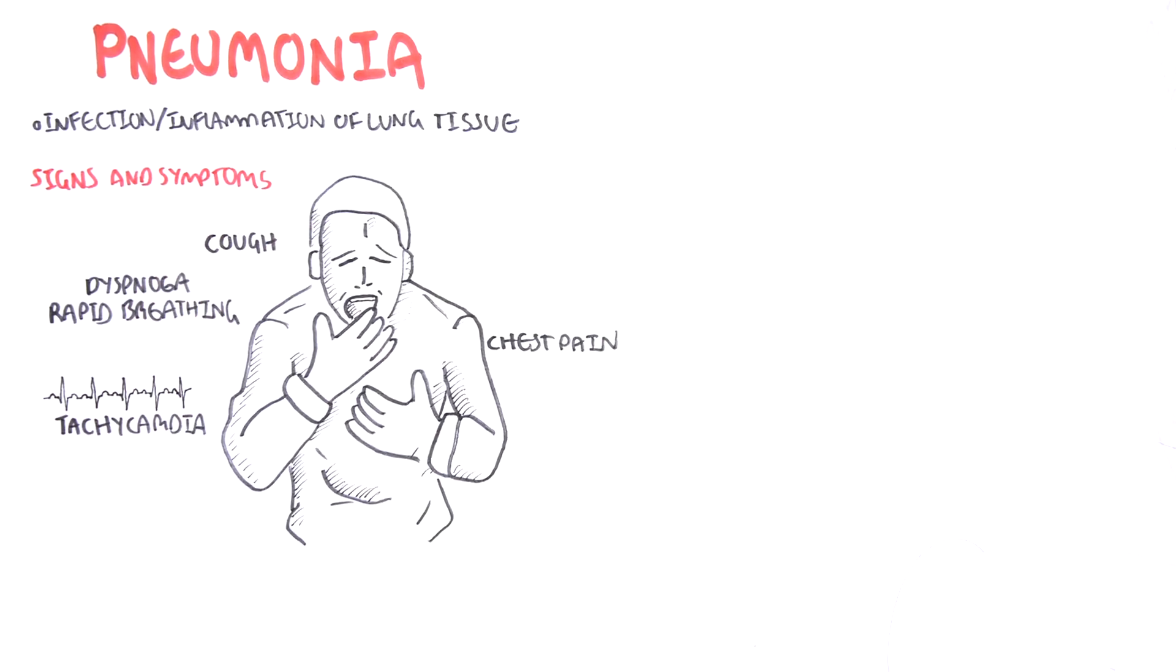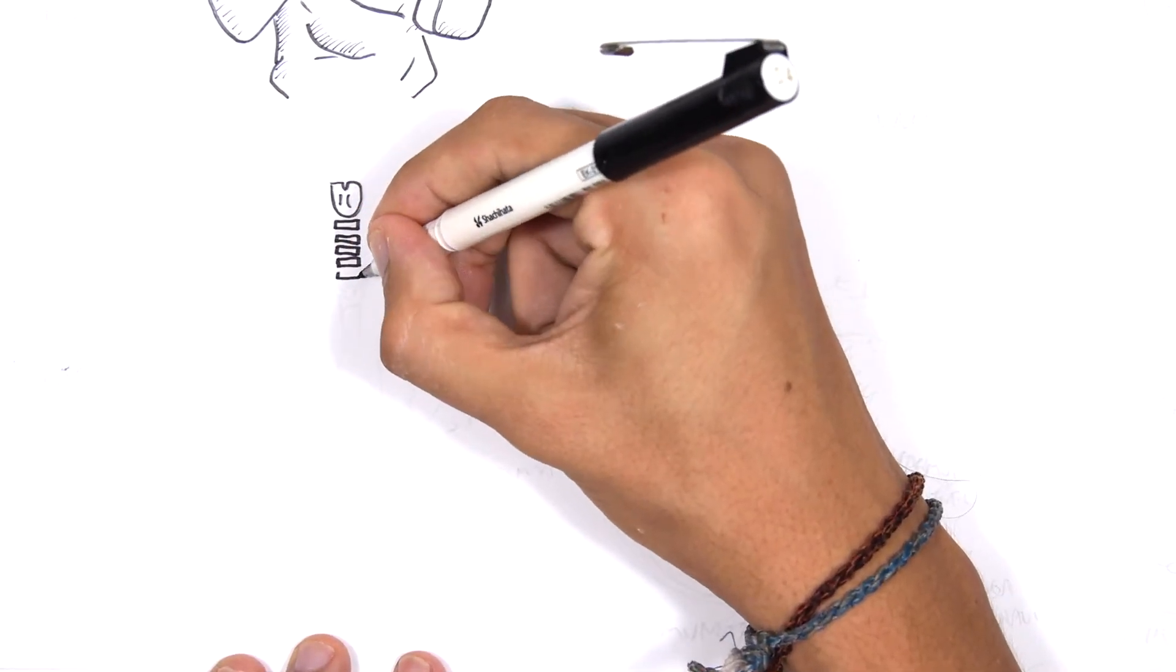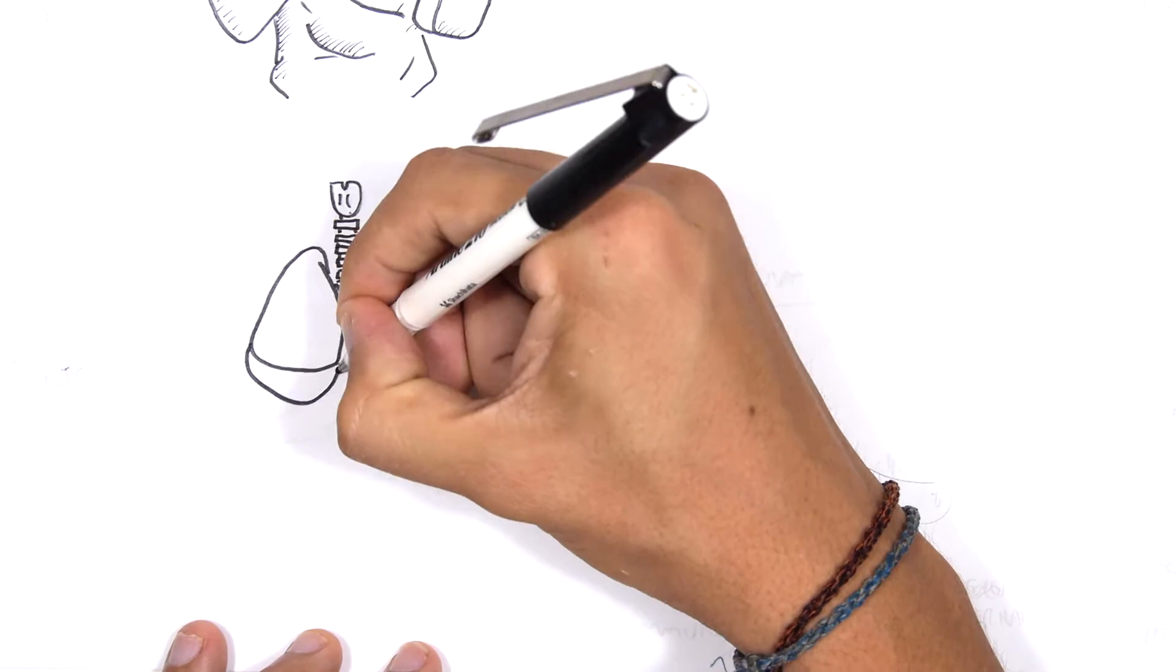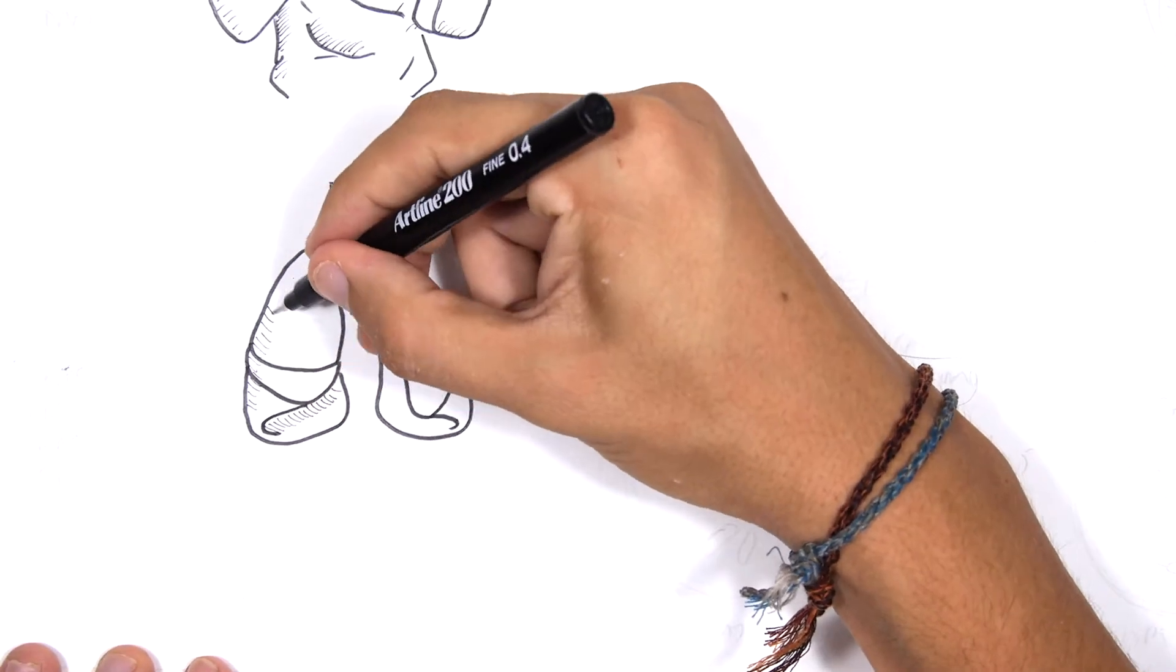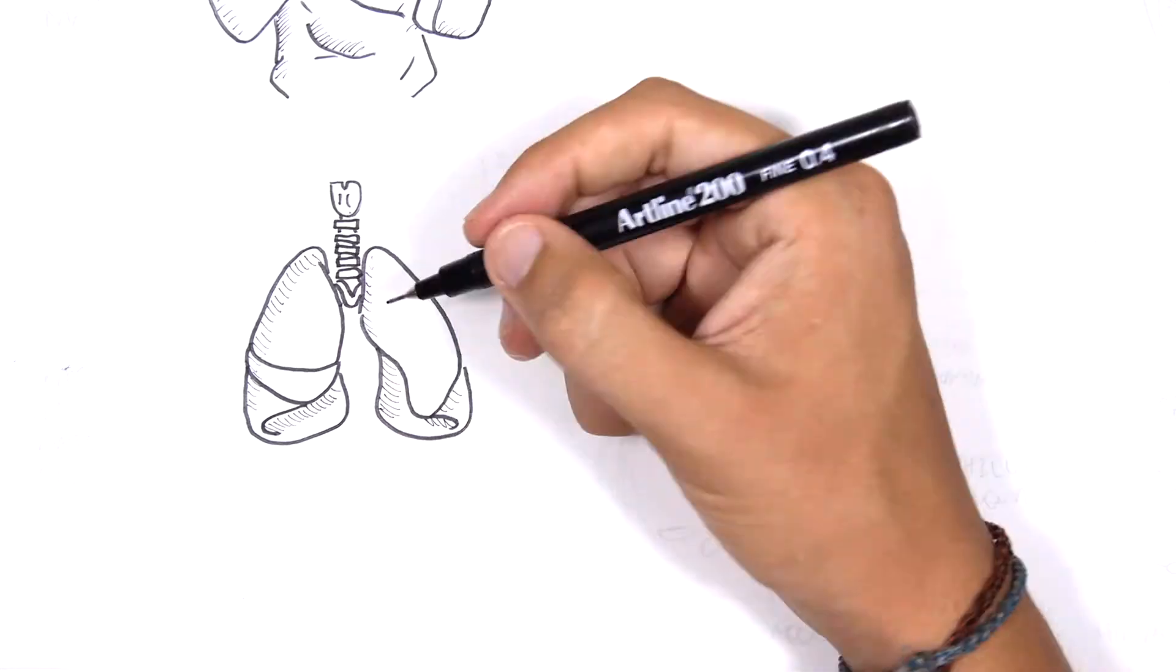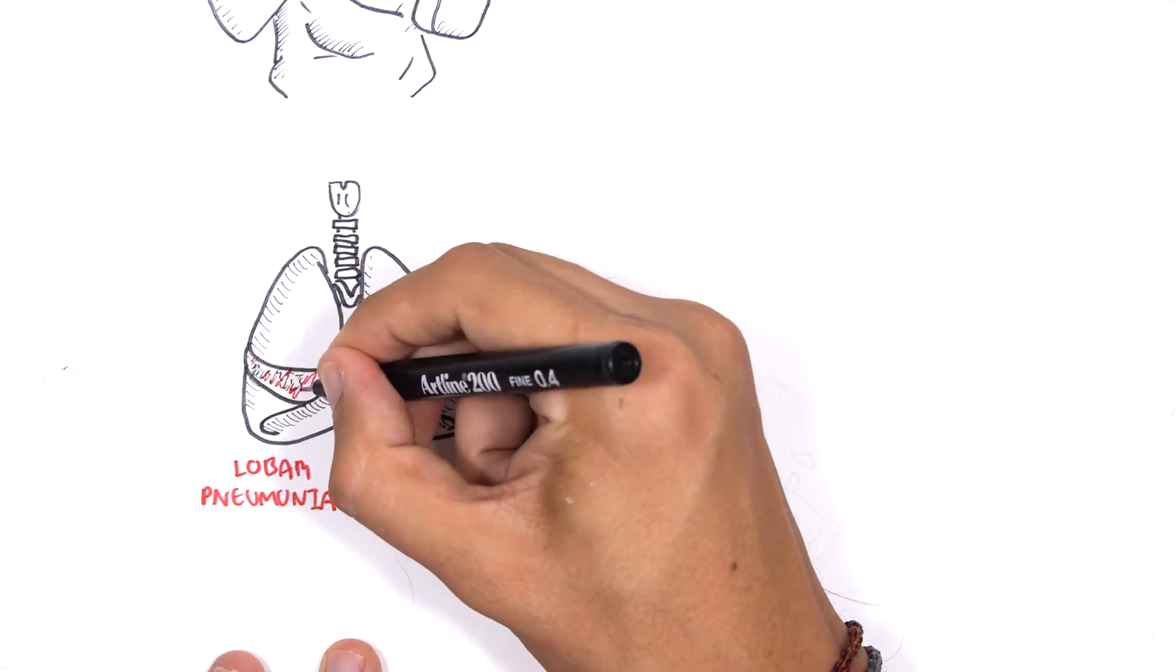Let us take a closer look at the lung with pneumonia. Pneumonia can be categorized into several types. One way to categorize it is based on how it affects the lungs or where it affects the lungs. The two main types are lobar pneumonia and bronchopneumonia.